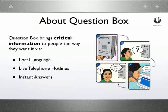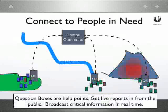It runs on GSM mobile phone infrastructure and electric power, which can also be done via solar panel. These can be installed in villages, slums, IDP camps, post-disaster areas, as well as in areas that are prone to disasters and with whom you need to communicate with people on the ground or get updates from people in real time. To use the Question Box, the user simply pushes the green button.